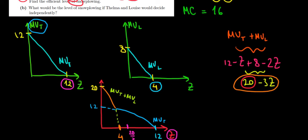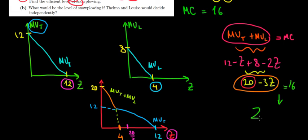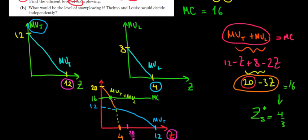The efficient level of snowplowing occurs where aggregate marginal utility equals the marginal cost of 16. So we set 20 minus 3Z equal to 16, which gives Z equal to 4/3 — that's 1 and a third. On the graph, we mark the marginal cost at 16, and it intersects the aggregate marginal utility curve at Z equals 4/3. That's the optimal level of snowplowing. In the next video we'll solve part B of the question.